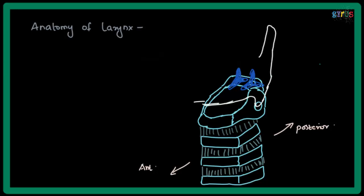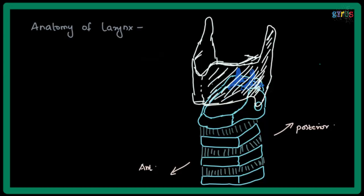And this is the thyroid cartilage. Anteriorly it covers all these layers. It is one of the largest and it covers. However, it is not covered at the back.